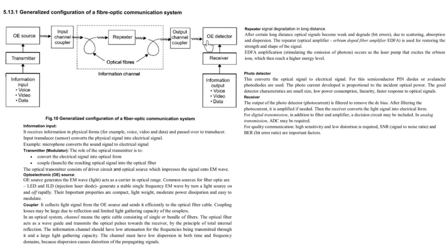This converts the optical signal to electrical signal. The OE detector will convert the optical signal which is received into the electrical signal. For this, semiconductor pin diode or avalanche photodiode are used. The photocurrent developed in OE detector is proportional to the incident optical power. If the detector is good, the detector should have the following characteristics like it should be small size, low power consumption, linearity, fast response to the optical signal.